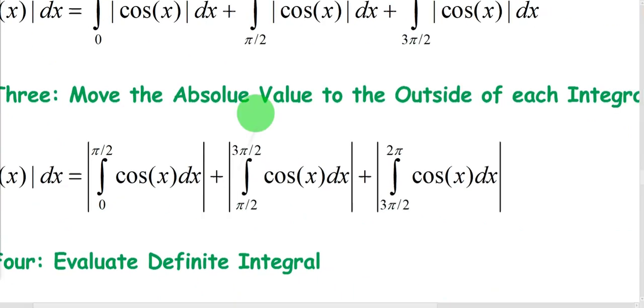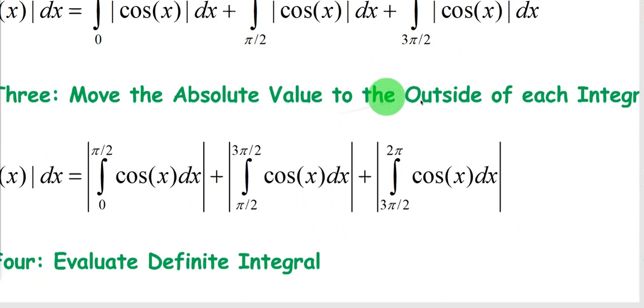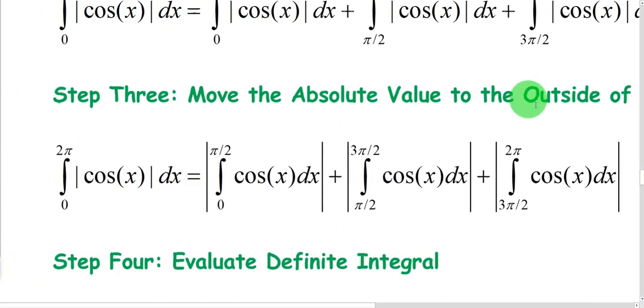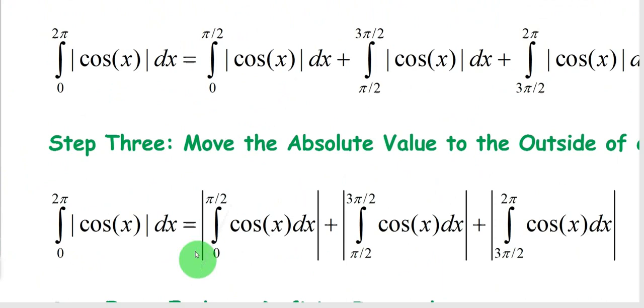So step three is to move the absolute value to the outside of each integral. We're just taking these absolute value bars, moving them to the outside, and that way we can now find the definite integral of cosine of x, since the absolute value bars are on the outside. We can do that for each piece.